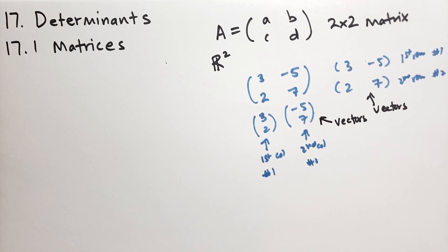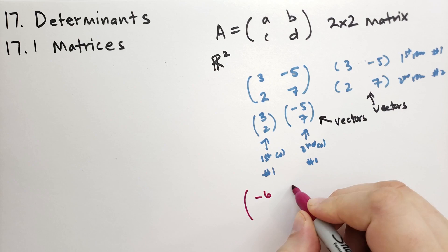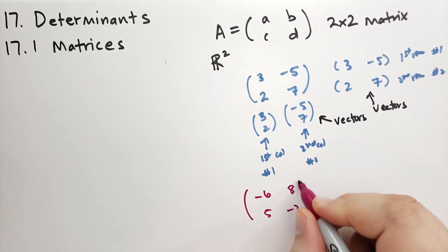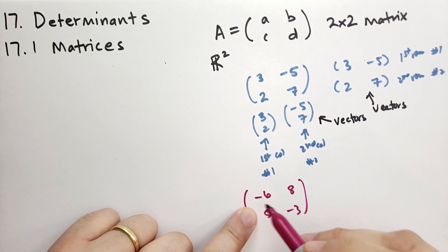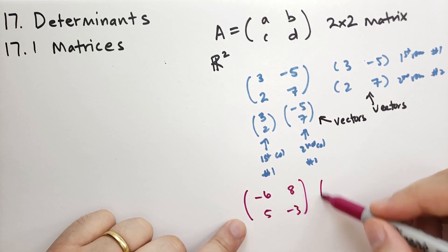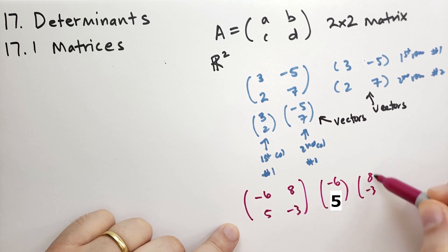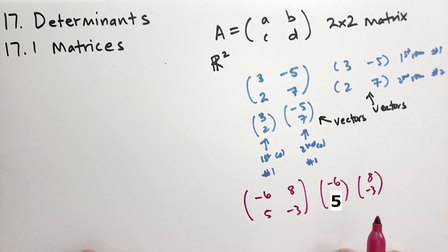Let's do another example. We have the matrix minus 6 and 8 and 5, column minus 3. This is a 2 by 2 matrix and we have the 2 column vectors: minus 6 and 8, and 8 and minus 3. And we have 2 row vectors: minus 6 and 8, and 5 and minus 3.